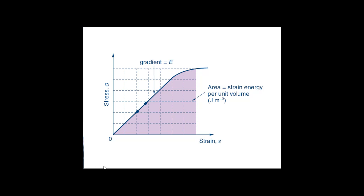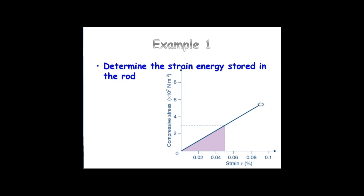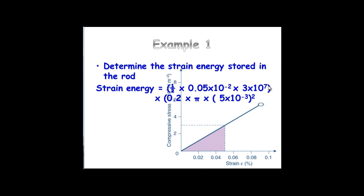Let's look at an example. We've got a glass rod that's compressed and has a strain of 0.05 percent. 'Percent' being key here — you're going to have to convert that back to a decimal, so divide by 100: 0.0005. We're also given dimensions of the rod. The first question is to determine the strain energy. So we have the area under the graph — it's a triangle, so it'll be half base times height: half times 0.0005 times 3. Then multiply that by the volume. Don't forget to look at the units in your graph.